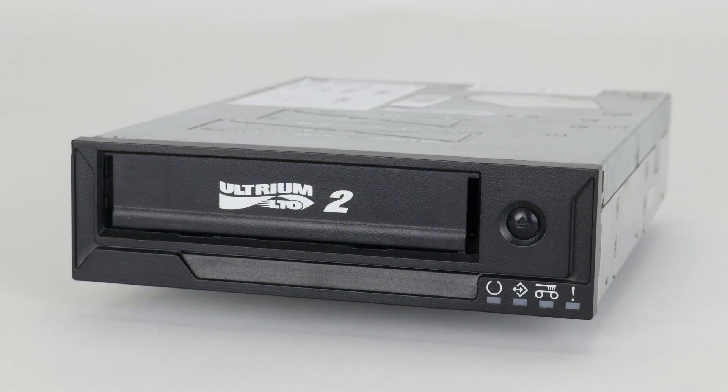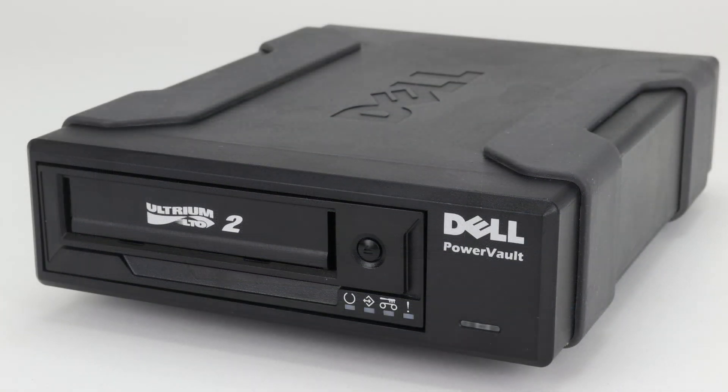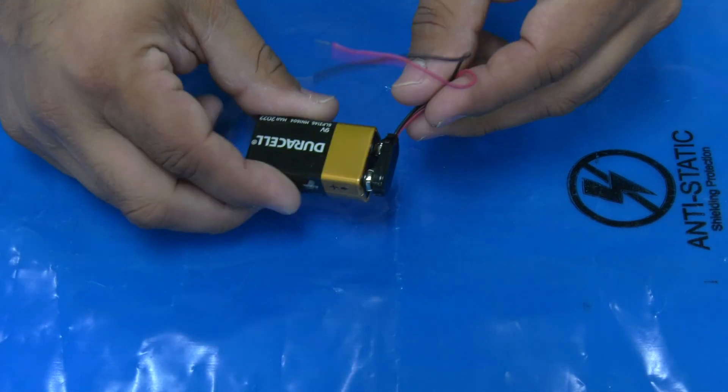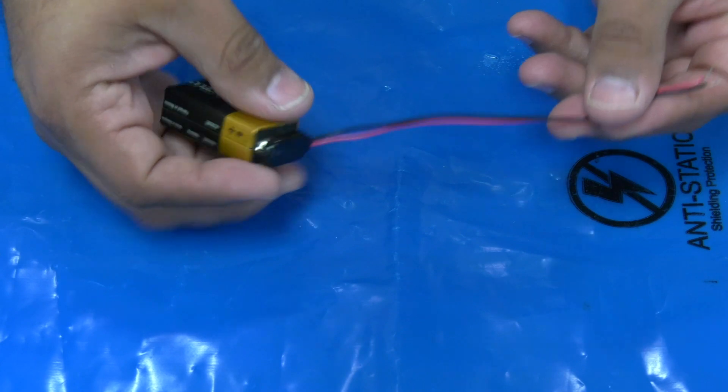Please be advised, this is for extraction of a tape from a defective tape drive only. Removing the tape from the drive will not fix a faulty drive, and the drive itself will still need to be replaced. Also be advised, before watching the rest of this video, you will need a 9-volt battery with small wire leads connected to it in order to complete this extraction.